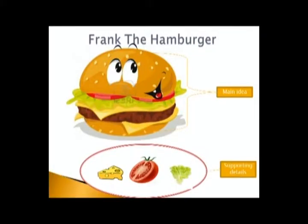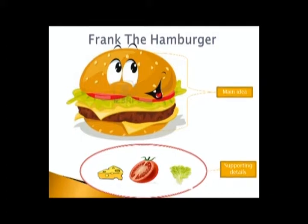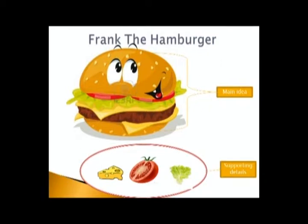Frank the hamburger! Look carefully at the hamburger. It has a bun at the top, then you see tomatoes, lettuce, cheese, the hamburger meat, and another bun at the bottom. Now if I should ask you what this picture is about, it would tell you the main idea. The cheese, tomato, and lettuce represent the supporting details.